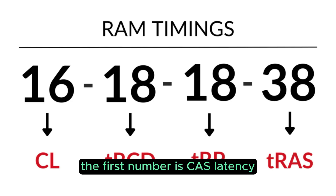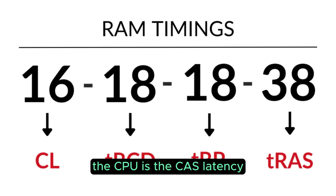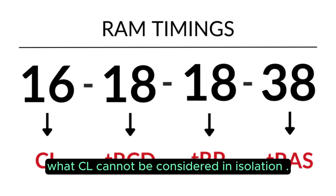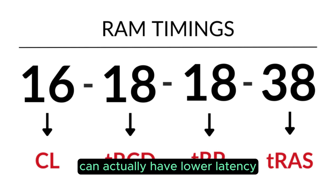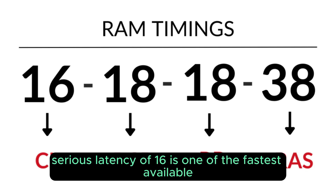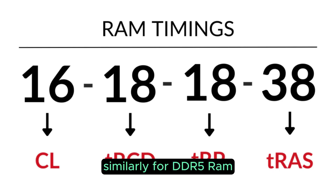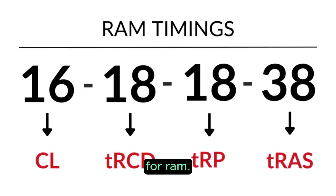As you can see in this image, the first number is CAS latency — the time it takes for the memory to respond to the CPU. CL cannot be considered in isolation, as RAM with a slower MT/s rating can actually have lower latency with a smaller CL rating. For DDR4 modules, a CAS latency of CL16 is one of the fastest available. Similarly, for DDR5 RAM, CL32 to CL36 is common, though CL32 is currently a sweet spot when it comes to latency.